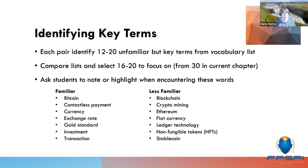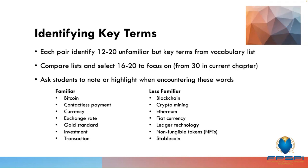On most vocabulary lists there are words that are regular enough that you don't need to go into much depth — like 'transaction,' which most students understand, or 'Bitcoin,' which they may have heard of but may not understand. 'Contactless payment' has an easy definition — using anything other than cash. Currency exchange rate, gold standard, and investment might be familiar, especially to older students. Less familiar vocabulary might include blockchain, crypto mining, Ethereum, fiat currency, ledger technology, non-fungible tokens, and stablecoin. You definitely want to make sure students understand all of the less familiar vocabulary words.